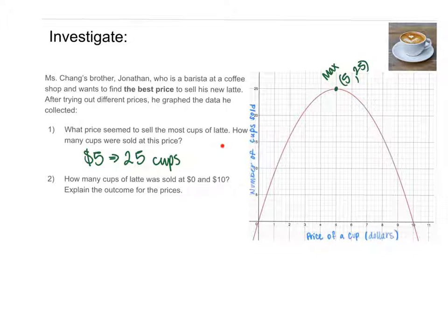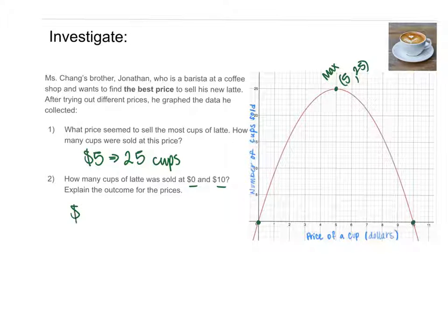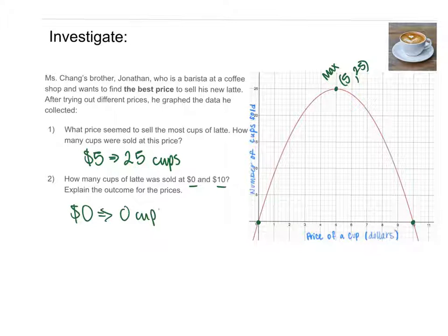The next part asks how many cups were sold at ten dollars and at zero dollars. Zero dollars is at the left and ten dollars is at the right on the graph, and both sit on the x-axis — meaning y is zero there. So zero cups were sold at zero dollars, and zero cups at ten dollars.